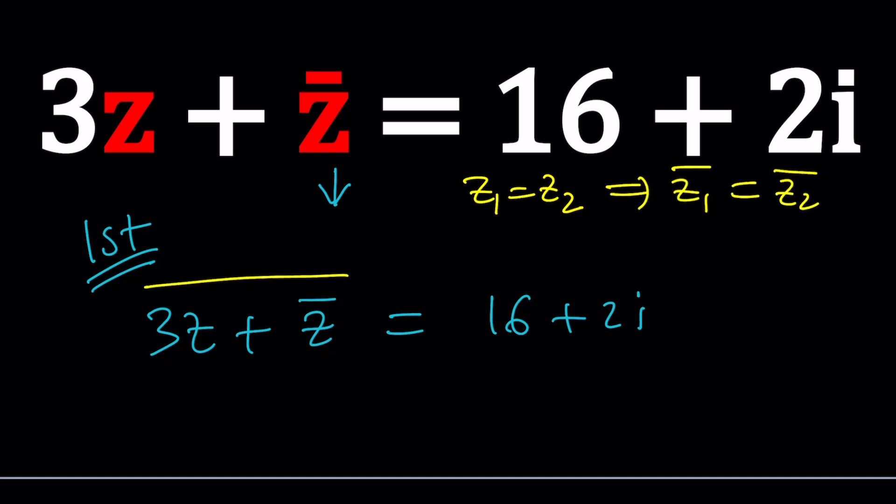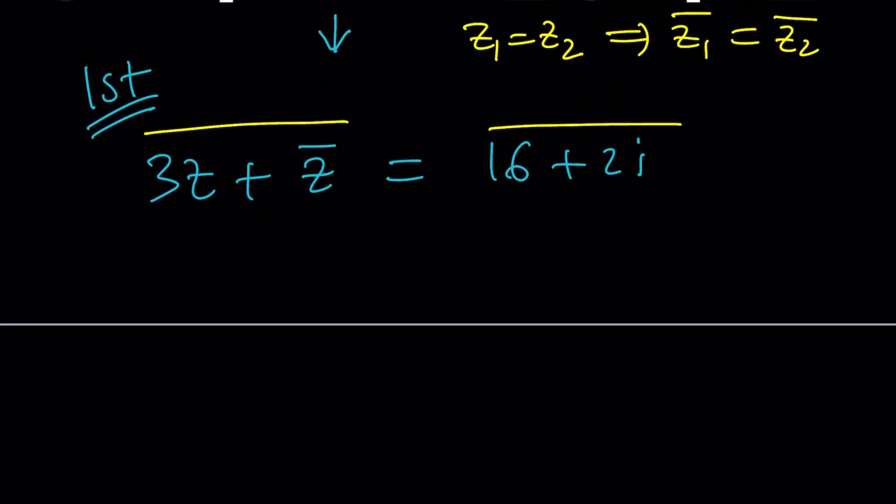So when you conjugate both sides, put a big bar on both sides. First of all the conjugate of a sum, what is it? It's the sum of the two conjugates. Or if you have a product you can conjugate each factor in the product, but the conjugate of a real number is itself. If z is equal to a plus bi, z bar would be a minus bi. You just change the imaginary parts.